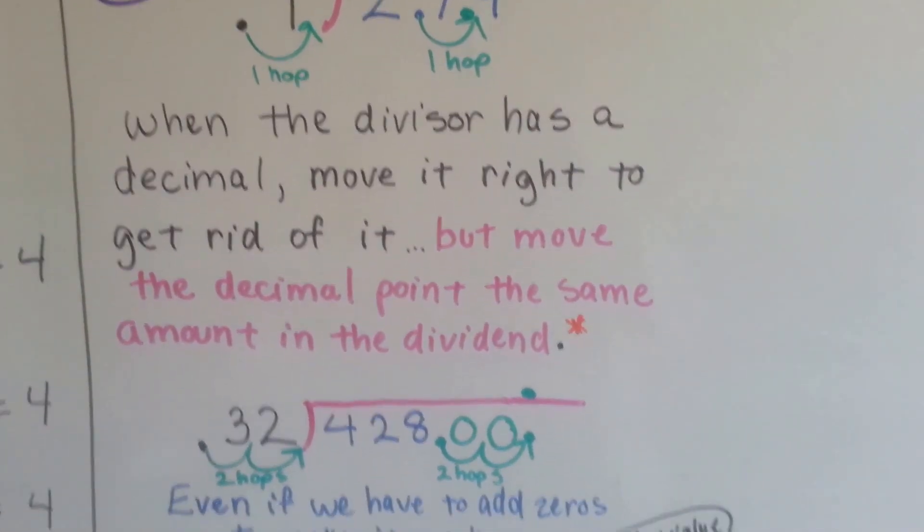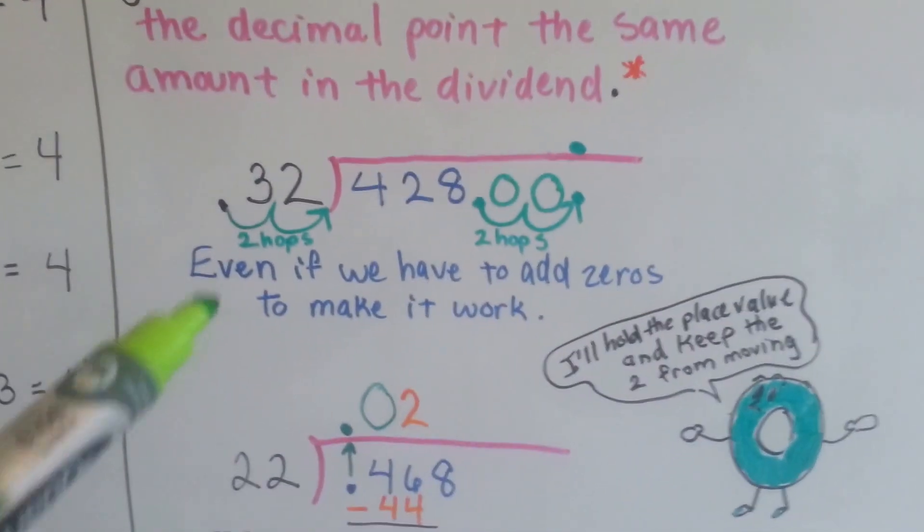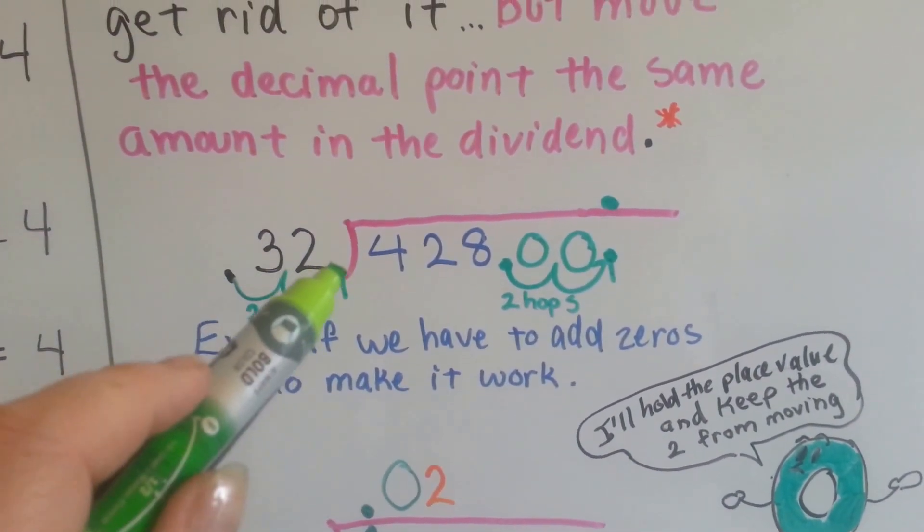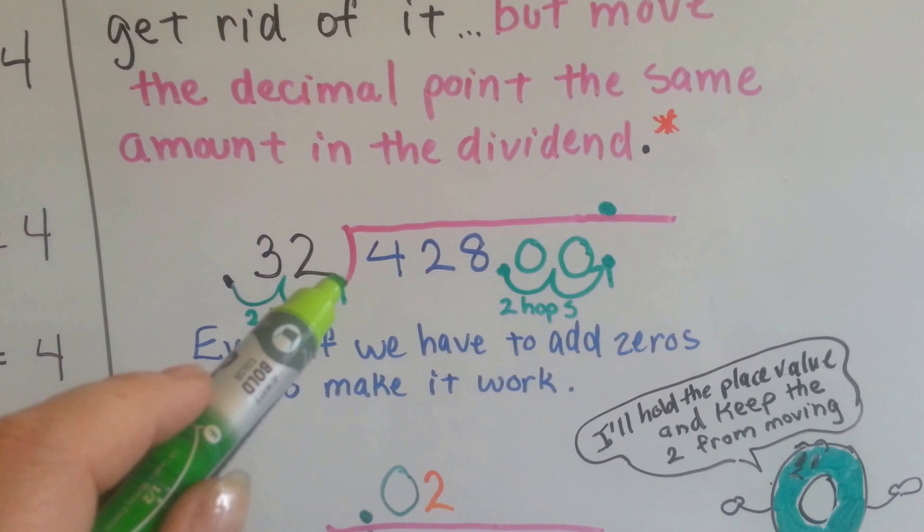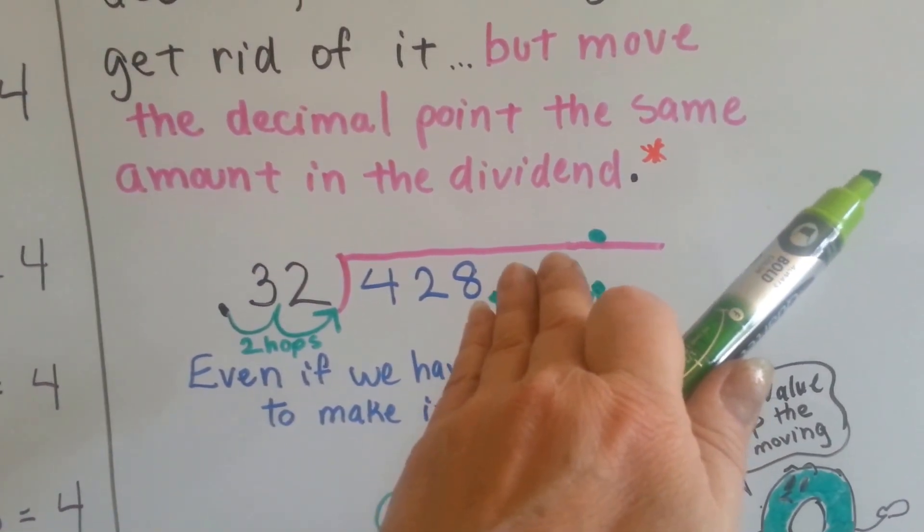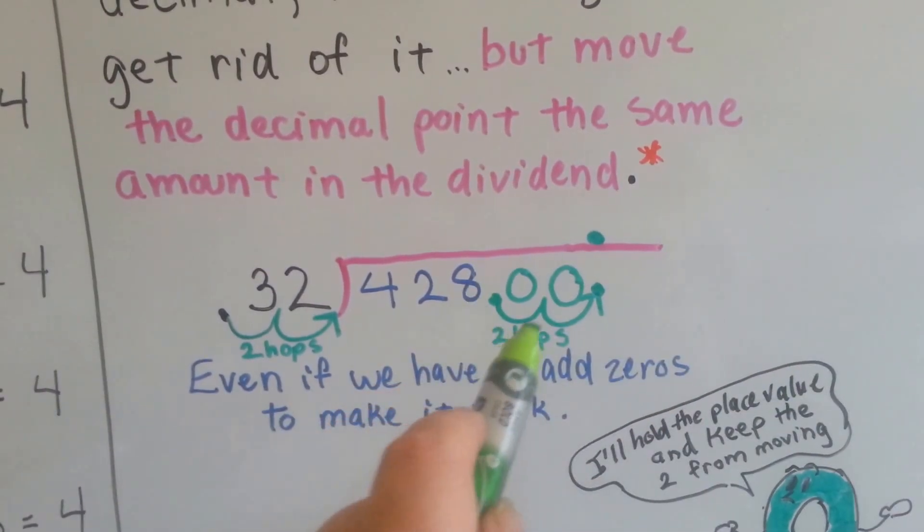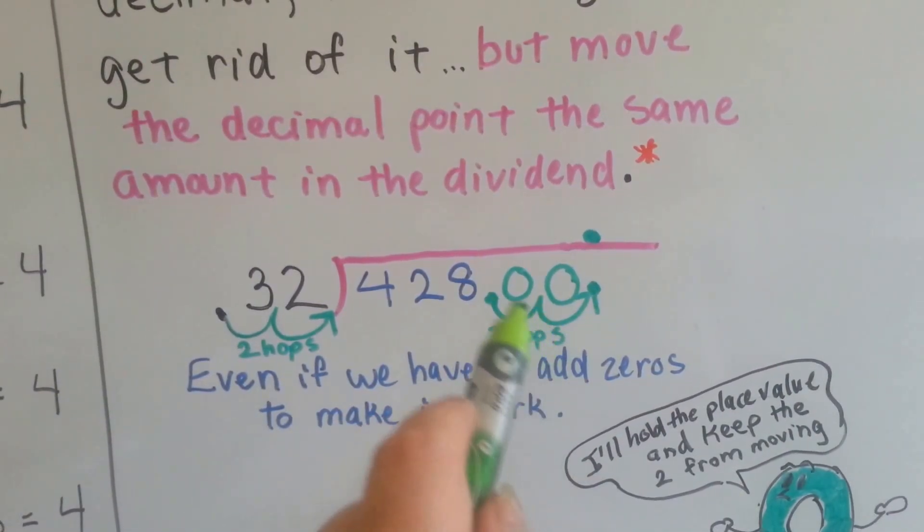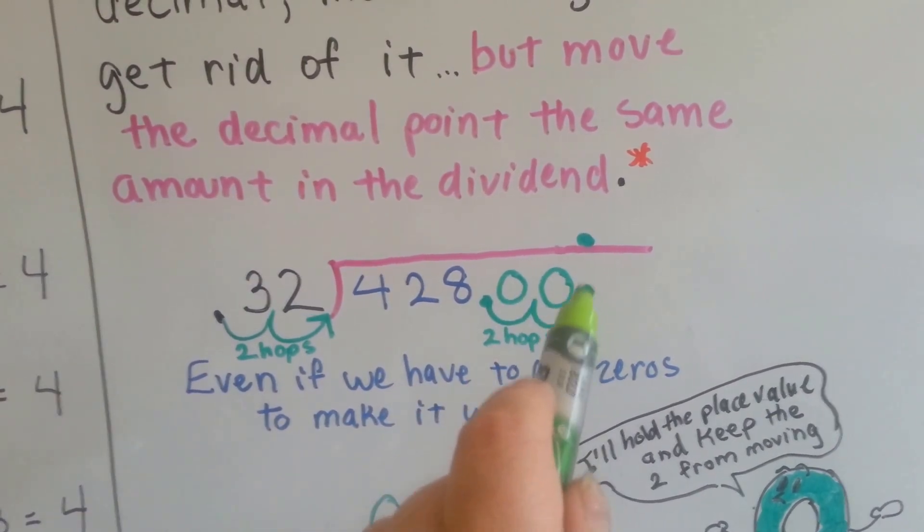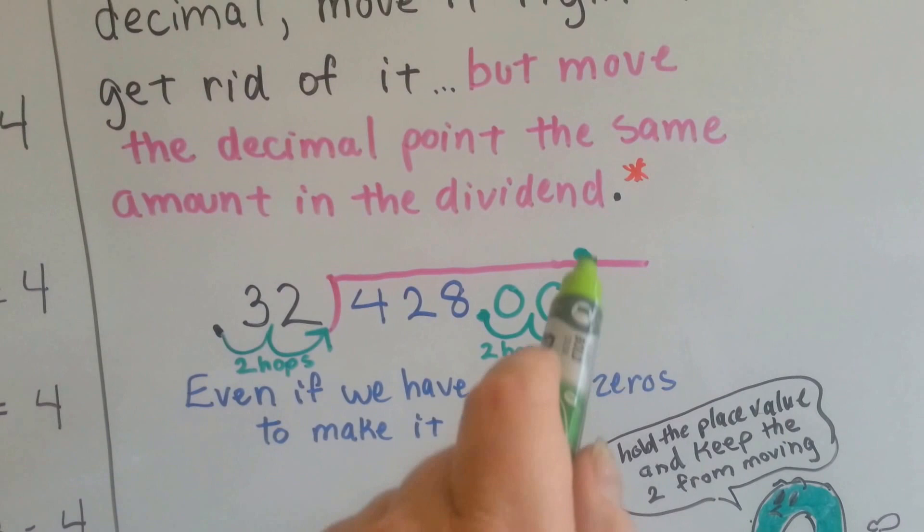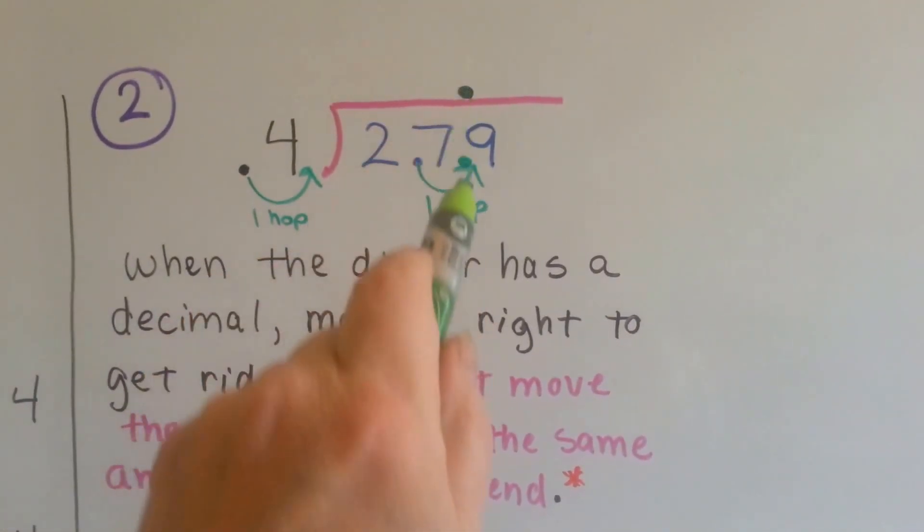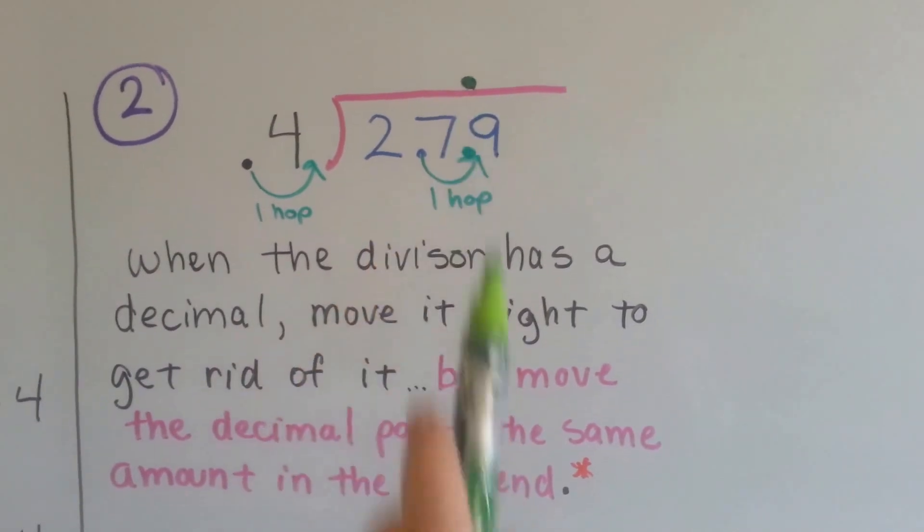Now, what happens when you hop the decimal point back like two spaces to get rid of it here, so we have a 32 instead of 32 hundredths, but you only have 428 here? Well, you do the two hops and you put zeros in to hold the places. Then the decimal point goes directly above where it is in the dividend for the quotient. See that? Same thing happened here. The decimal point goes directly above into its new spot, alright?